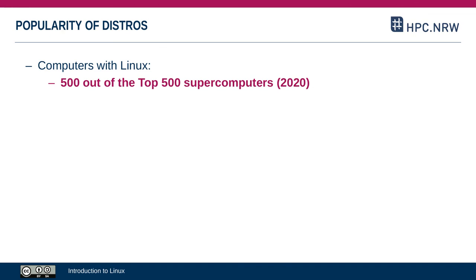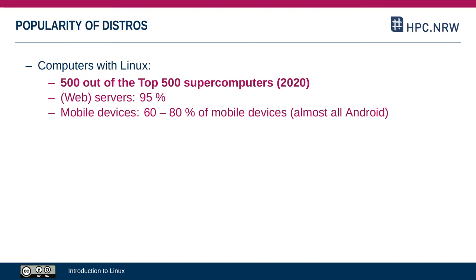If you look at the web servers that run most websites, 95% of those are running some sort of Linux. Interestingly, most mobile devices run Android, which uses the Linux kernel. The other popular mobile operating system is iOS, which is a Unix variant because it is a variant of macOS, and that in turn is a variant of Unix.